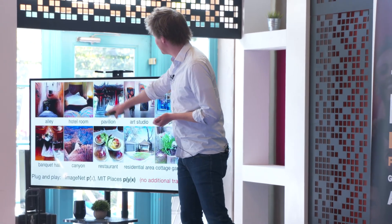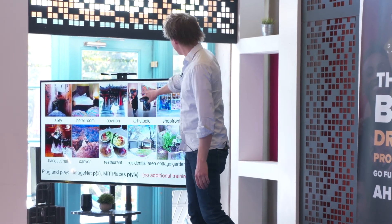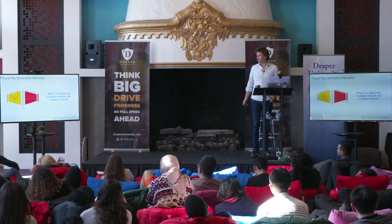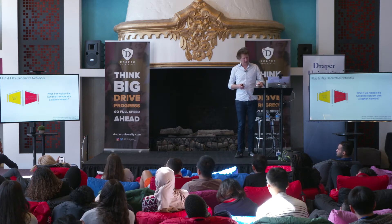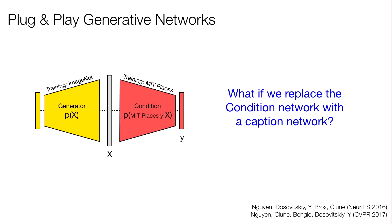There are other categories too — canyon, banquet hall, art studio, and so on. Banquet hall shows some dress on the bottom as if someone's dancing. We can also replace the network with a caption network. Caption networks take a picture and generate a caption for it — you show it the Eiffel Tower and it might say 'the Eiffel Tower in the springtime.'